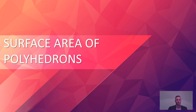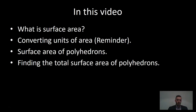So far in the unit on area in the series of measurement, we've been looking at the area of plain, two-dimensional or flat shapes. In this video we'll extend our understanding to the surface area of three-dimensional shapes called polyhedrons. We'll look at what surface area is, converting units of area again, the surface area of polyhedrons, and finding the total surface area of polyhedrons.